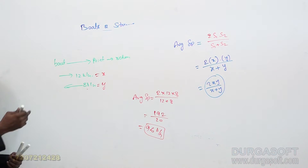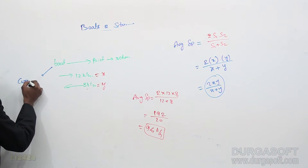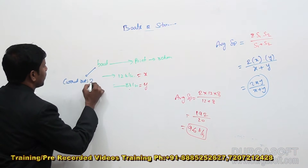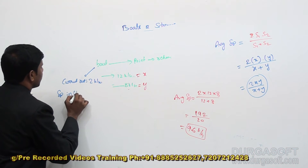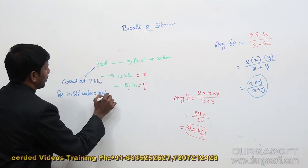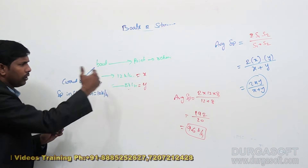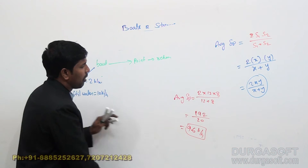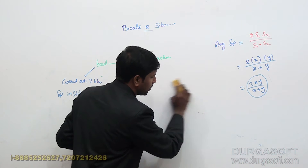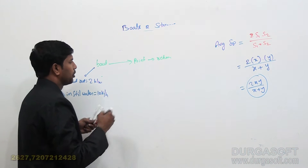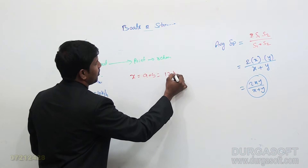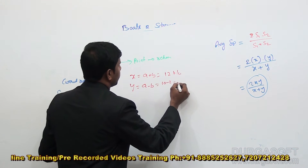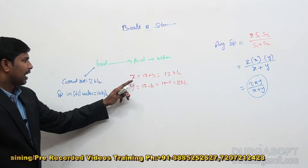Suppose instead of downstream and upstream speed, we are given the current rate as 10 kilometers per hour and the speed in still water — we don't have downstream and upstream speeds directly. Since the formula uses downstream and upstream speeds, we find downstream speed X as A plus B, which is 2 plus 10 equals 12 kilometers per hour, and upstream speed Y as A minus B, which is 10 minus 2 equals 8 kilometers per hour.